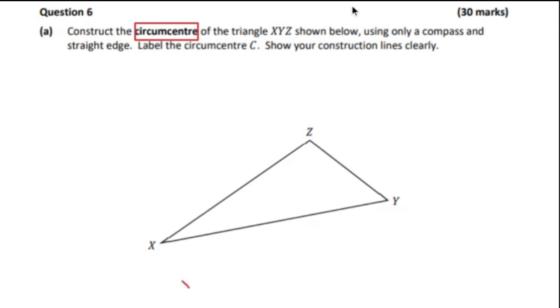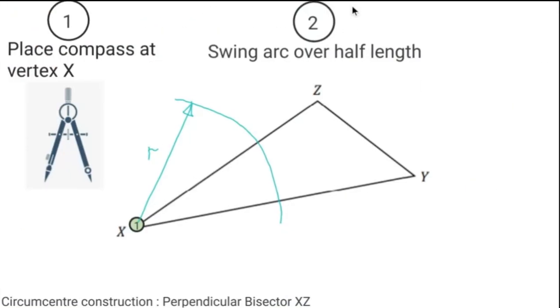First of all, place the compass at one of the vertices, so in this case we'll choose X. Place the compass on here, swing your arc, and make sure that it's over the halfway mark of the line XZ. You could mark in your radius as well with an arrow.